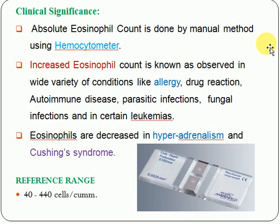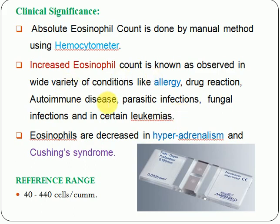Increased eosinophil count is known as eosinophilia. Eosinophilia can be seen in conditions like allergy, some kinds of drug reactions, autoimmune disease — where our body cannot distinguish between self and non-self and destroys healthy cells — parasitic infections, fungal infections, and in certain leukemias, meaning blood cancers.